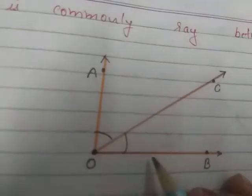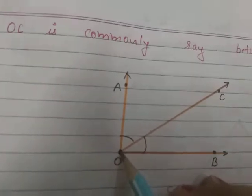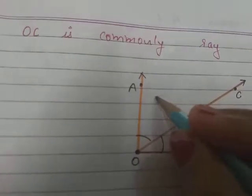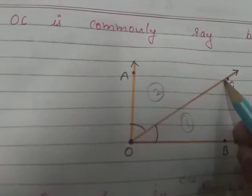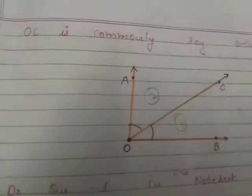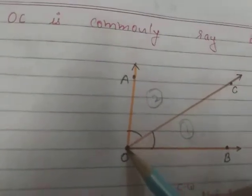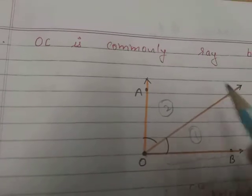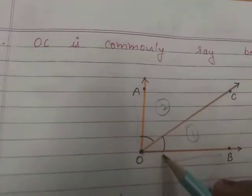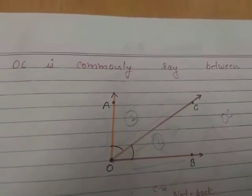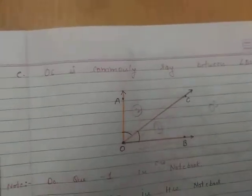For one ray in common: an angle is made up of two rays and one common point. For angles BOC and AOC, the rays BO and AO are different, but ray OC is shared. So OC is the common ray between angles BOC and AOC.